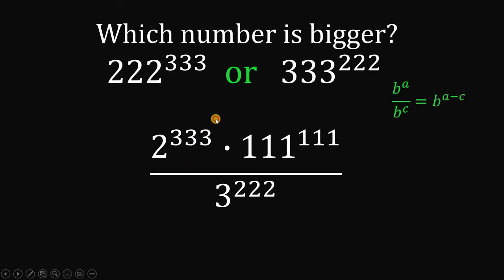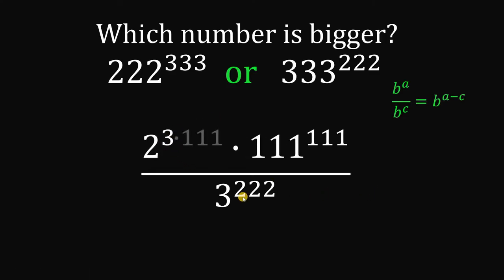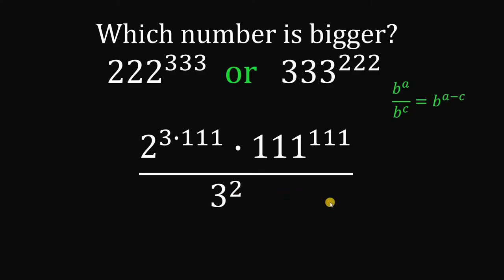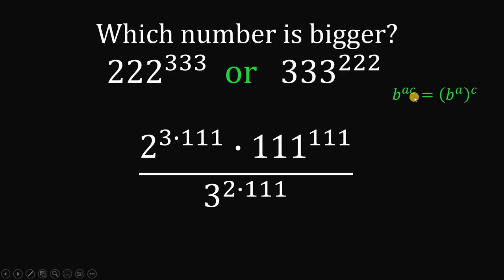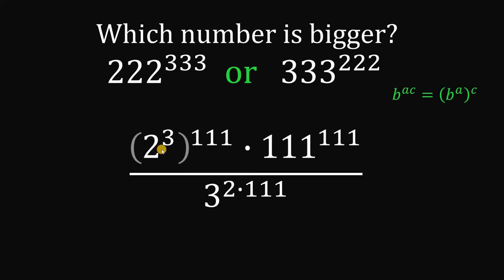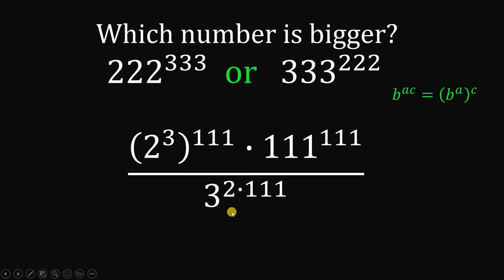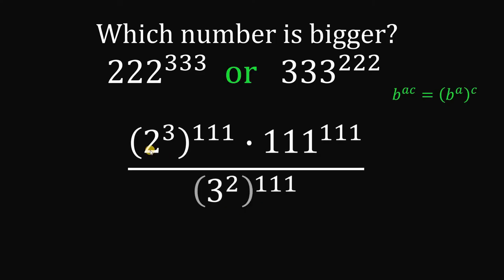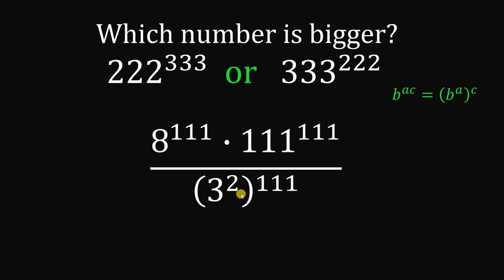Now, 333 can be factored as 3 times 111, and 222 is just 2 times 111. Using the law of exponents — b^(a×c) = (b^a)^c — 2 raised to (3 times 111) can be written as 2 raised to 3, raised to the power of 111. We will do the same thing on the denominator. Note that 2^3 is simply 8 and 3^2 is simply 9.